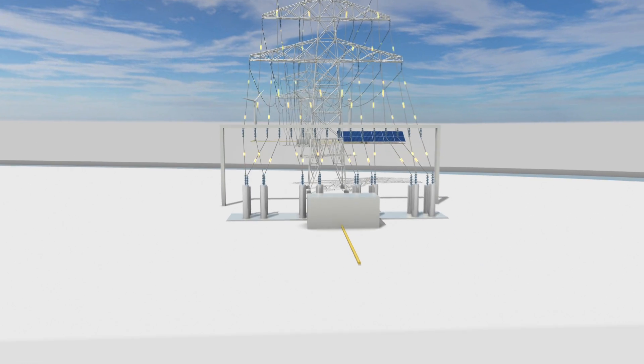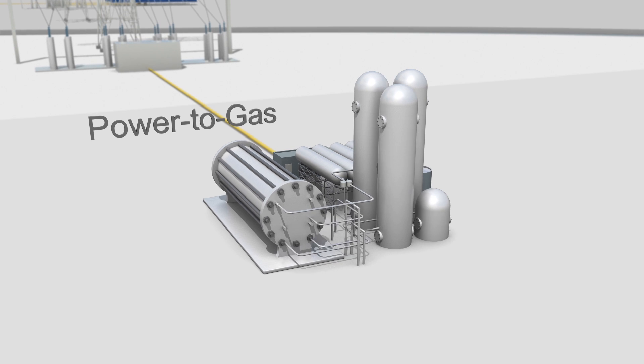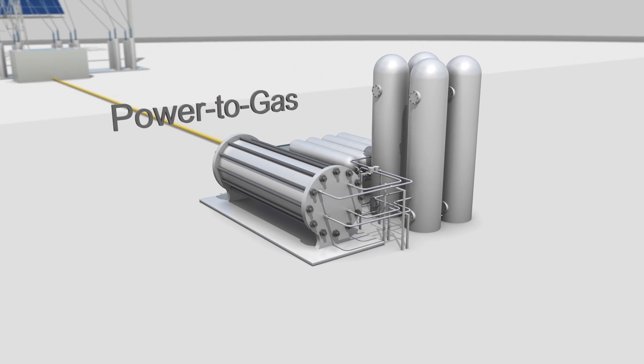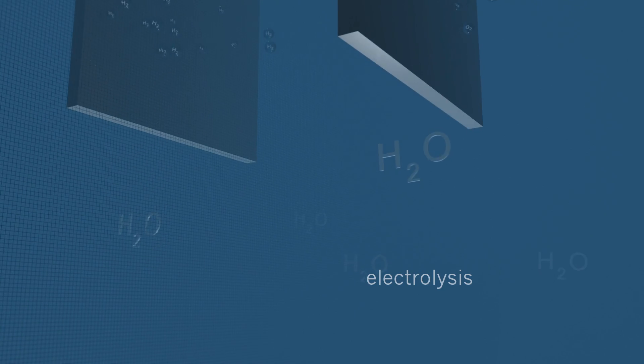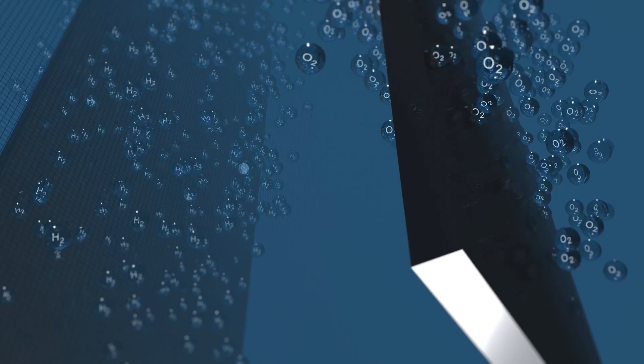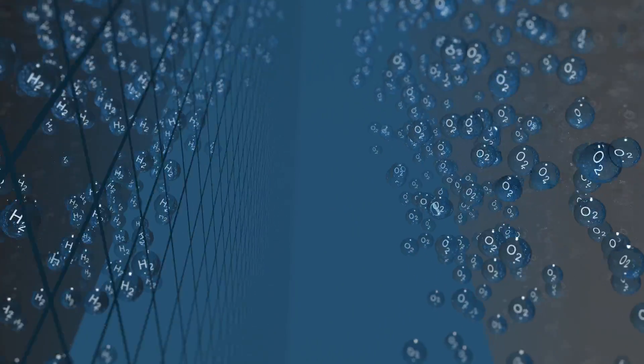This principle is called power to gas. Basic to a power to gas installation is water. By adding electricity, we engage in a process called electrolysis. By doing so, we create two types of gas, hydrogen and oxygen.